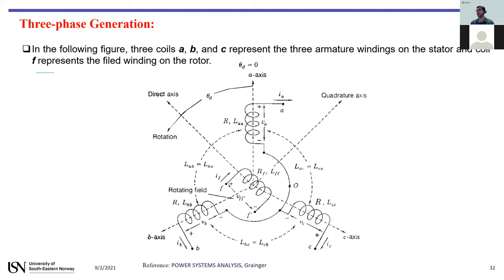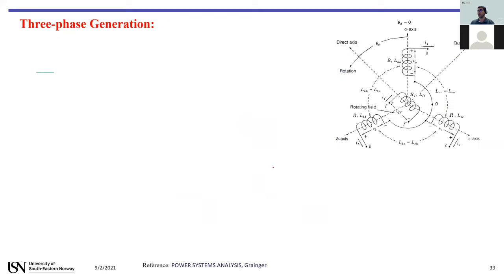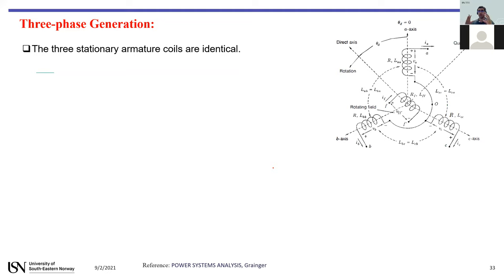For the equivalent circuit, consider a figure with three coils a, b, and c. Each coil is treated as an inductance — a winding. Coils a, b, and c are the armature windings on the stator, while coil f is the field winding mounted on the rotor. The three armature windings are stationary and identical, representing the three similar phases.